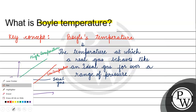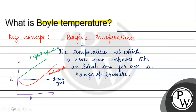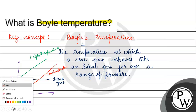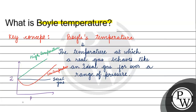If we are at too low a temperature, we move away from ideal behavior. At a certain good temperature — Boyle's temperature — the real gas behaves like an ideal gas over a range of pressure.